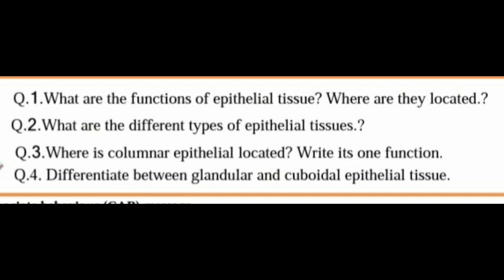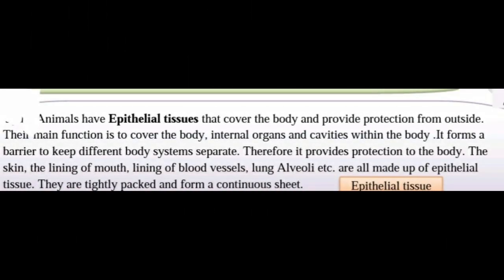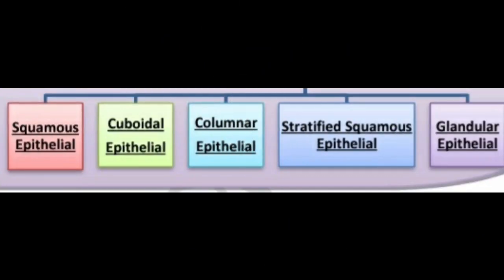Epithelial tissues cover the body and provide protection from outside. The main function is to cover the body, internal organs, and cavities within the body. It forms a barrier to keep different body systems separate, providing protection to the body. The skin, lining of mouth, lining of blood vessels, lung, etc. are all made of epithelial tissues. There are four types: squamous, cuboidal, columnar, stratified squamous, and glandular epithelial.